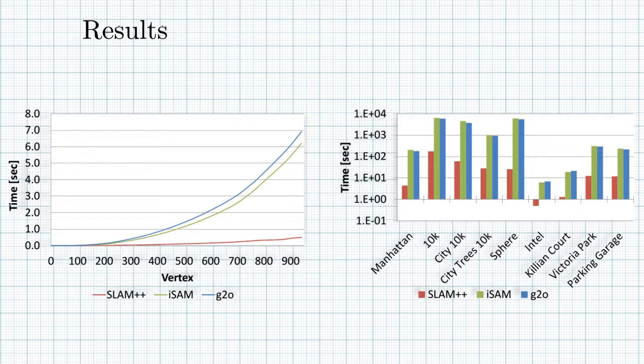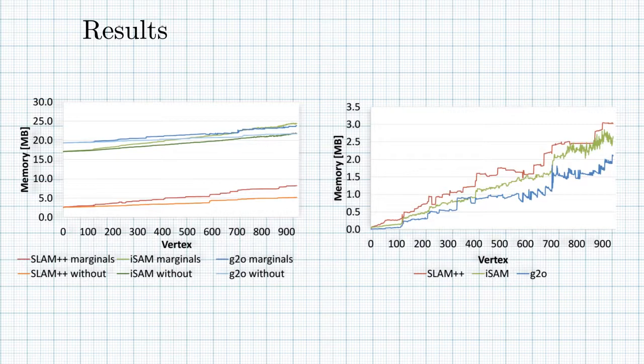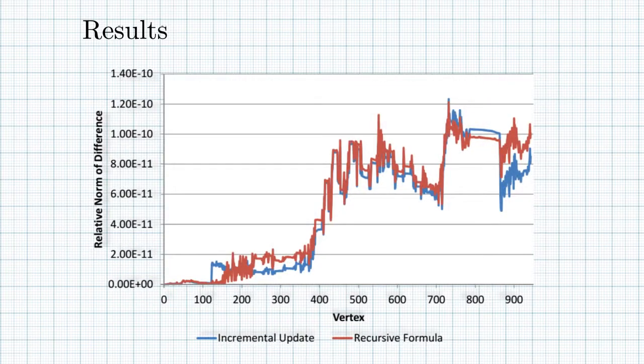We tested the implementation on several SLAM data sets, comparing the time to recover the block diagonal and the last block column of the covariance matrix every step. We also analyzed the memory requirements, and we can say that the overhead is very small. And what is interesting is that when testing the accuracy of the incremental updates, it shows increased precision over the recursive formula. More details about the results can be found in the paper.